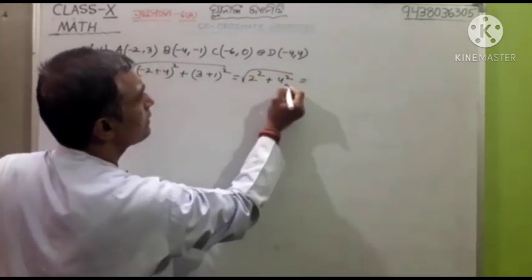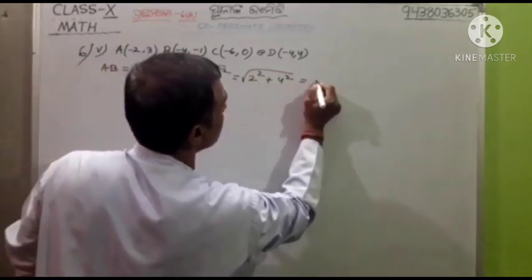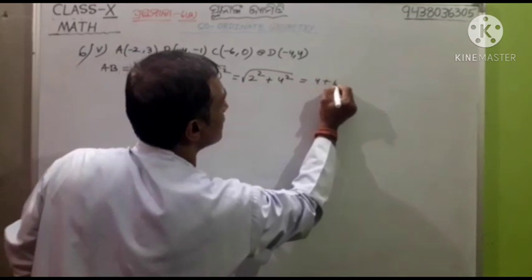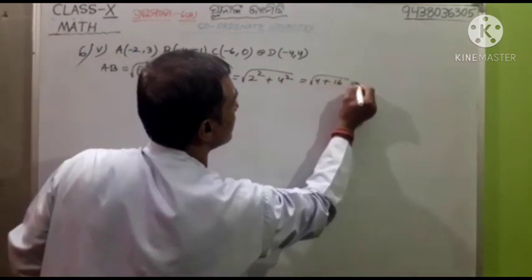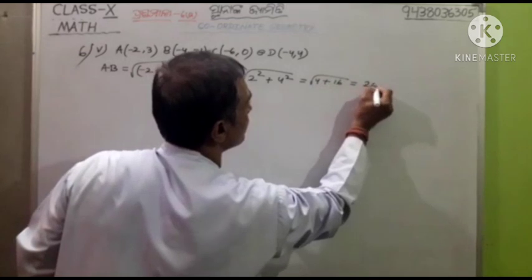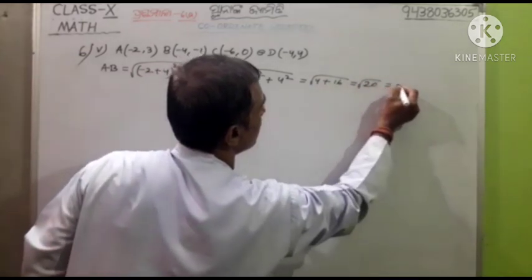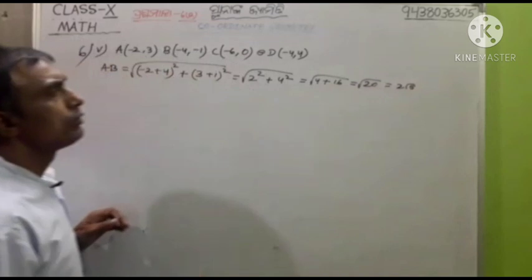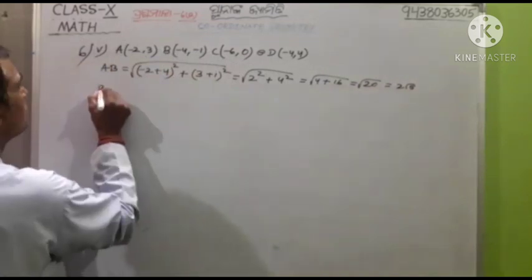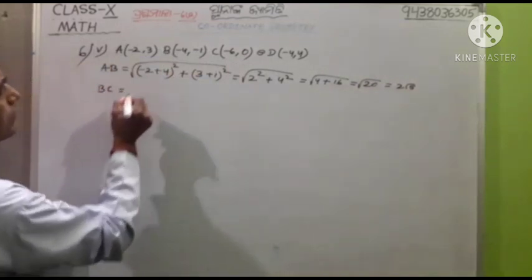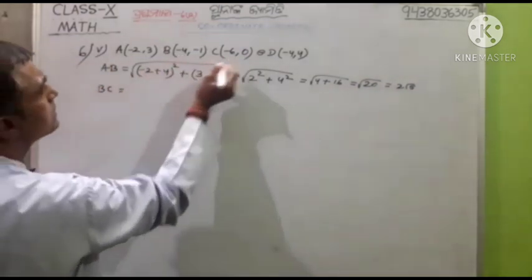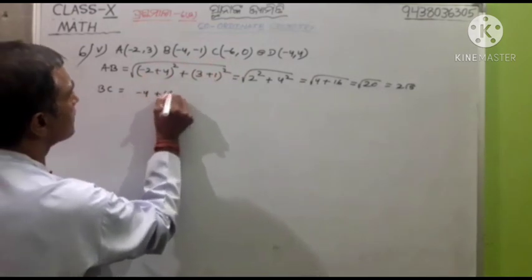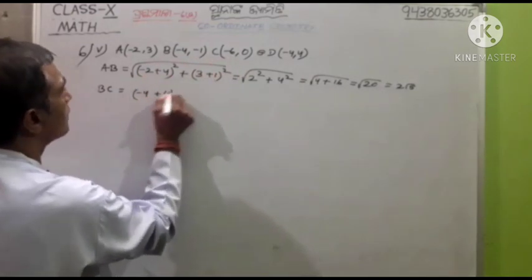This is 4, 64. This is a small part. The root over is equal to 2 root 5. So let's go outside. B, C: minus 4 plus 6 plus square.